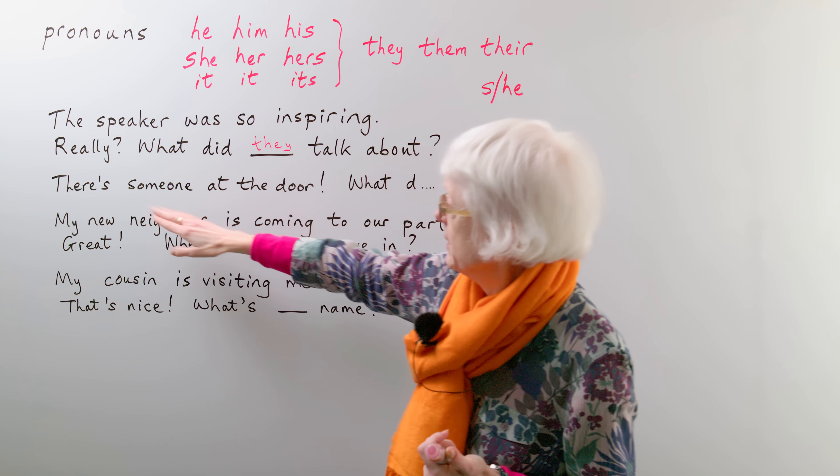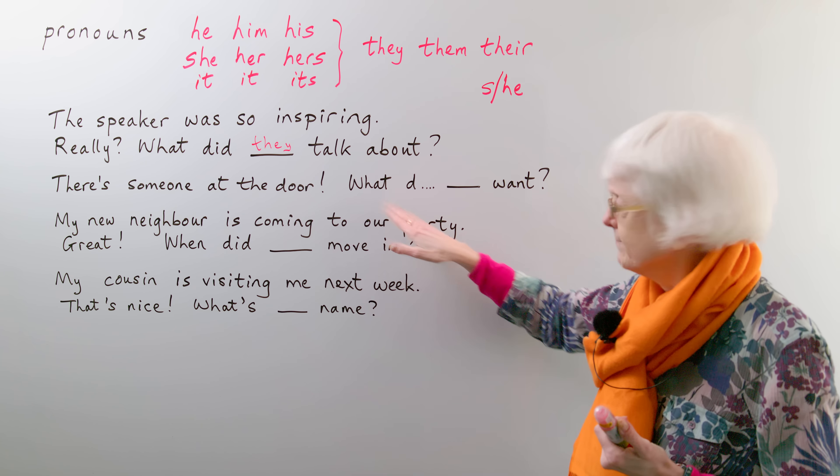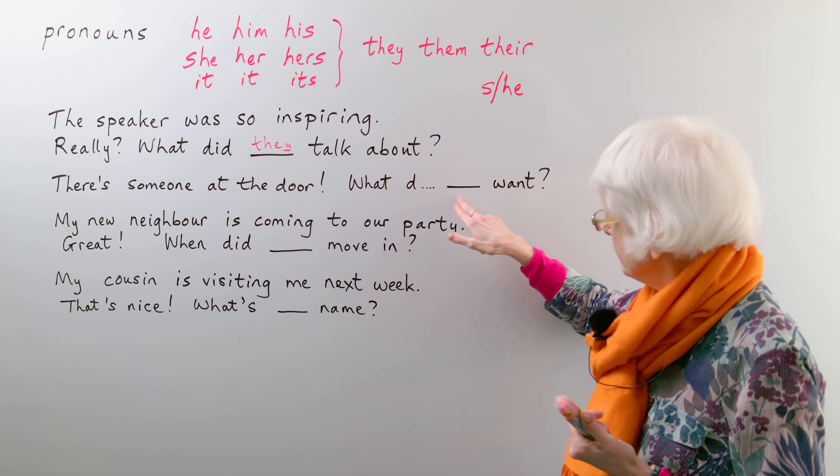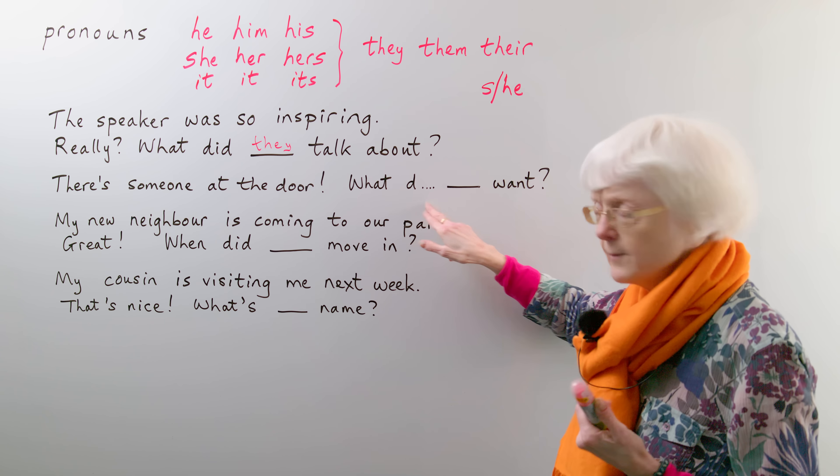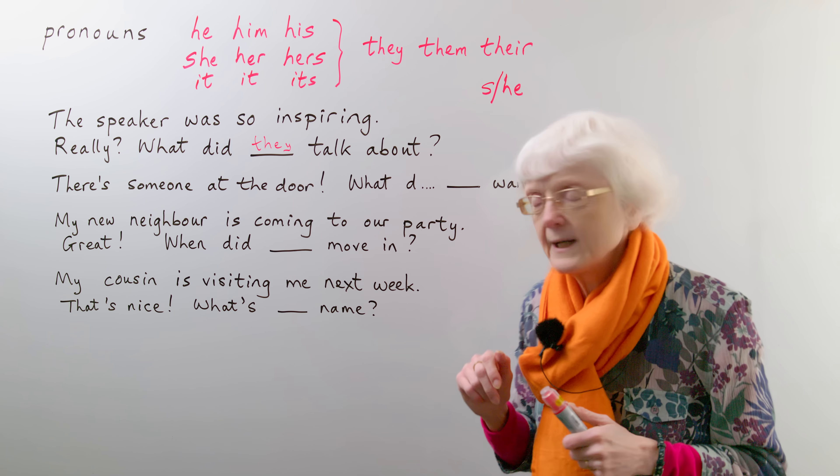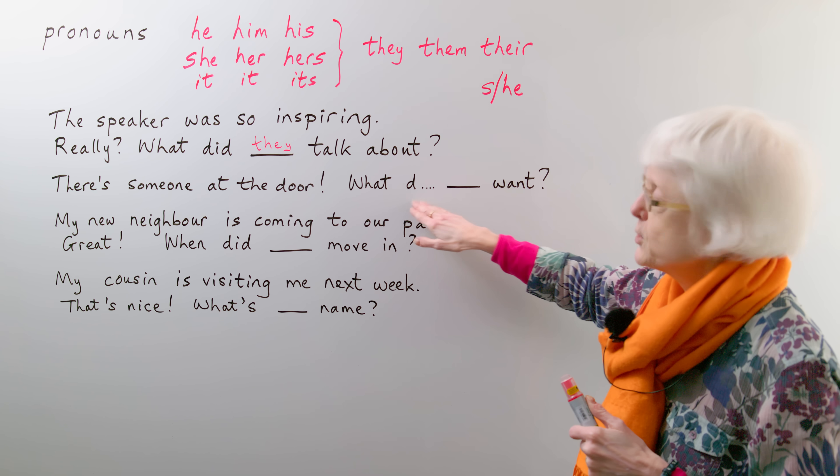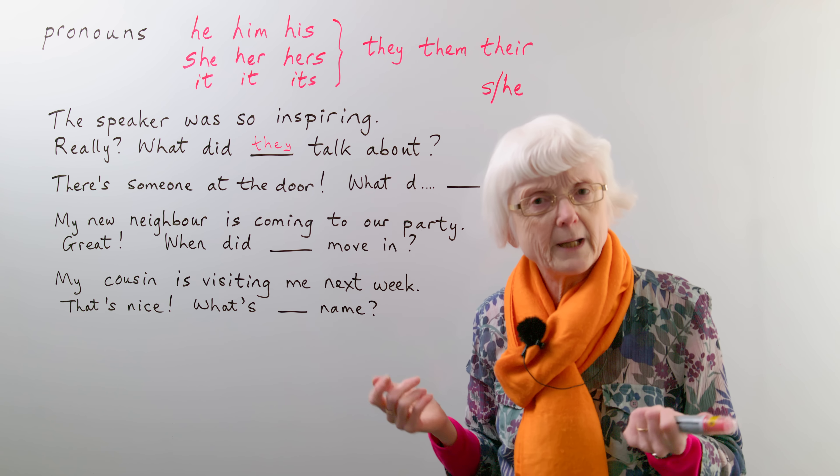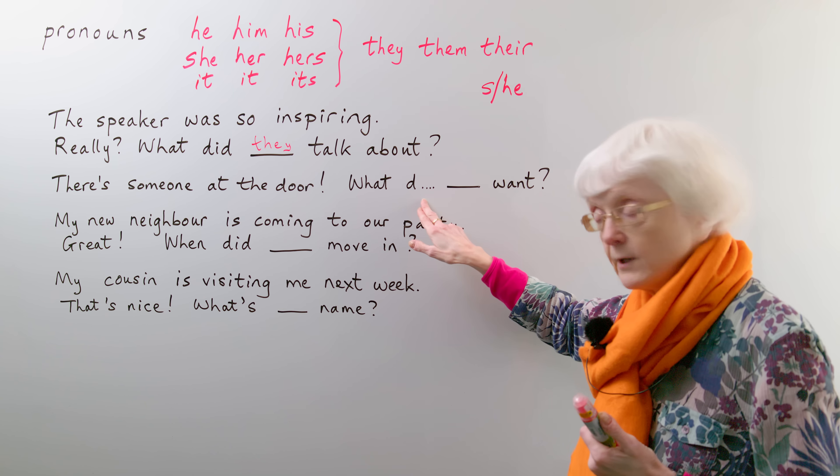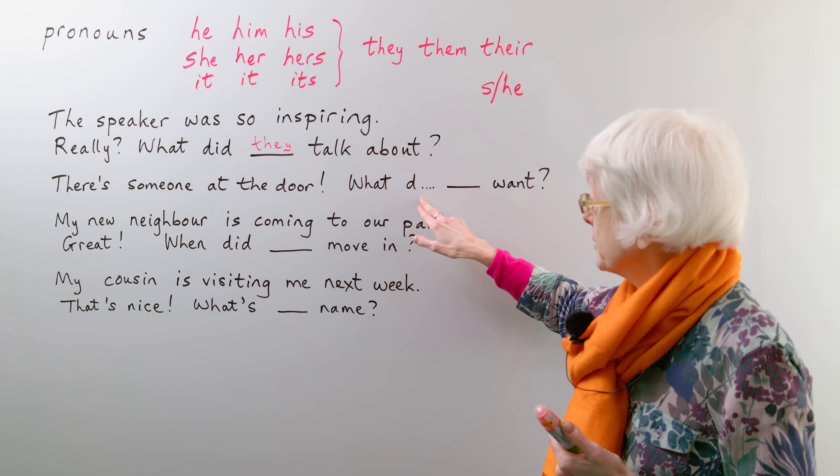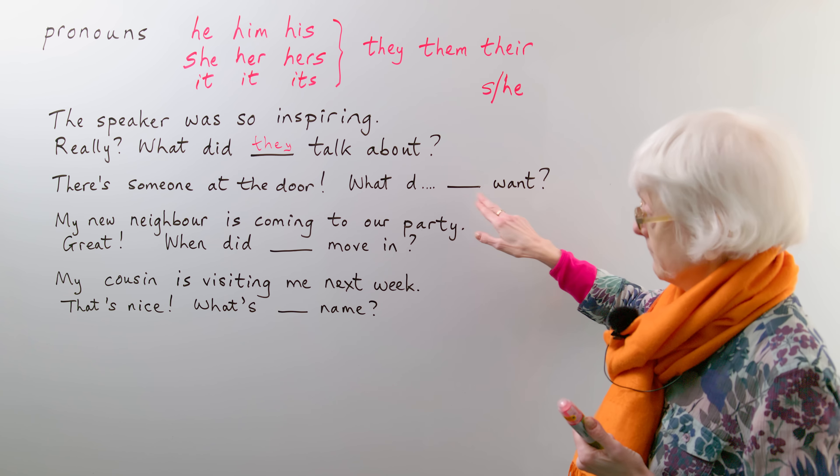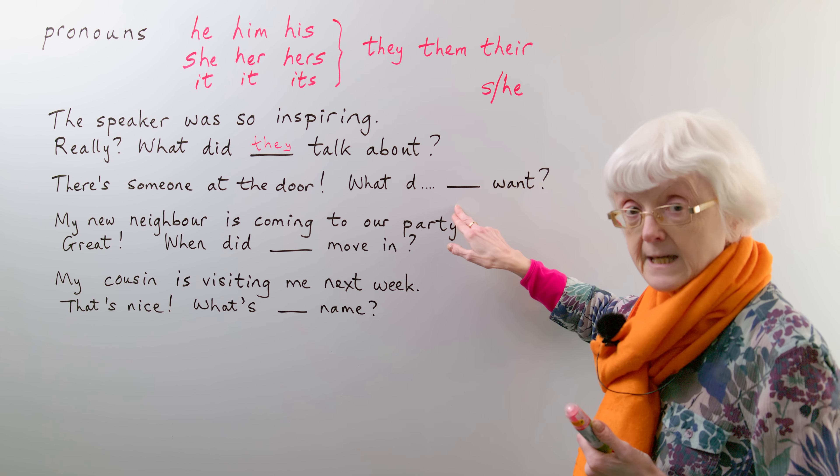And then similarly, there's someone at the door, what... want. Or do you say what do... want, or what does... want. So perhaps you can work out, what would you put here? If you don't know, there's someone at the door, male or female, we don't know. So how would you put that? And you've got to get the right form of the auxiliary verb here, as well as the alternative to he or she.